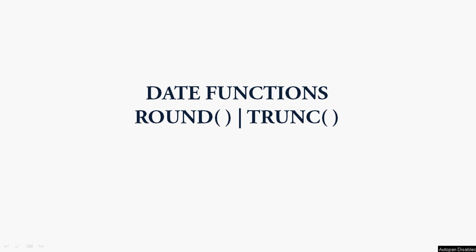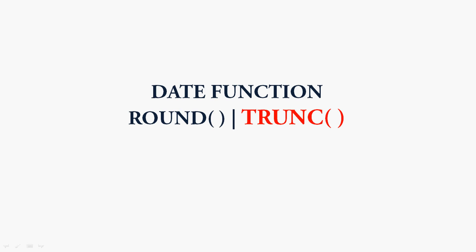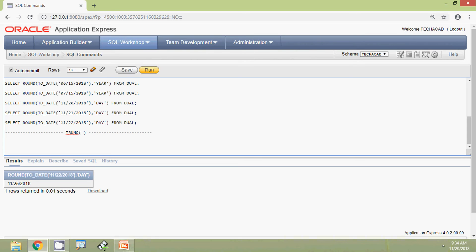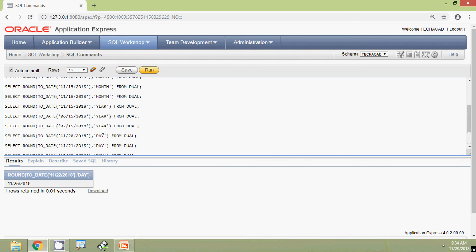Now we are clear with the date function ROUND. We will move to the next date function: TRUNC. This function returns a date truncated as per the user's requirements. The syntax is: TRUNC(date, format), where the format is an optional parameter.